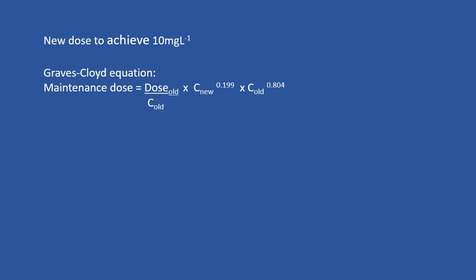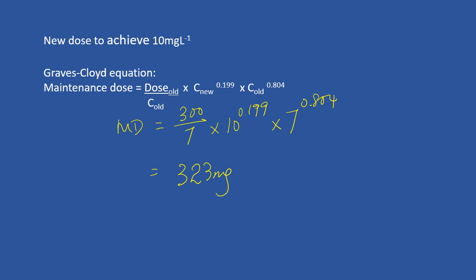To calculate the maintenance dose to achieve a new concentration of 10, we can use the Grave-Clite equation. Putting in the values: maintenance dose equals the old dose of 300, multiplied by new target 10 to the power of 0.199, multiplied by old concentration 7 to the power of 0.804. Solving this equation, the answer will be 223 mg, which you can round up to 320 or 330 mg.